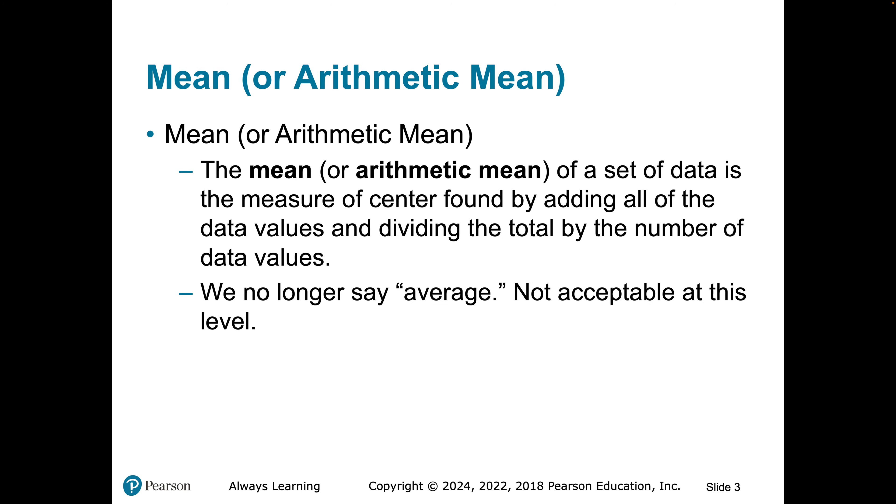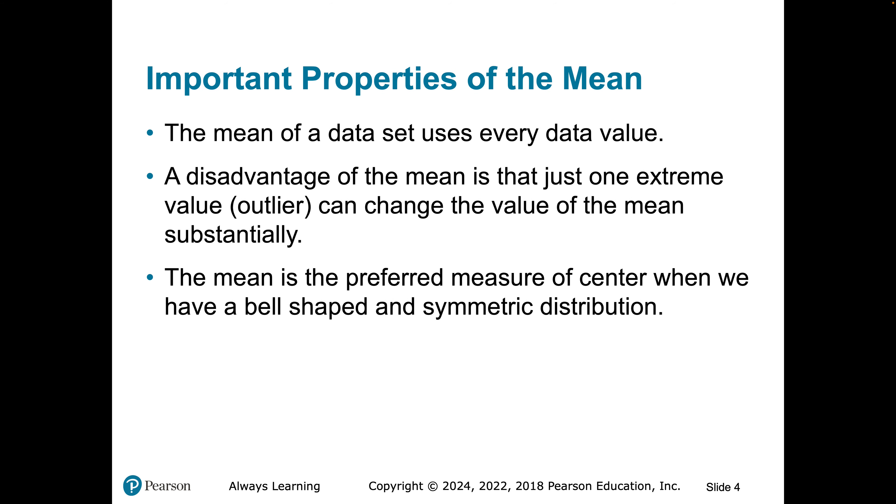So the mean is just the arithmetic mean. A lot of people call it the average. Once we get into advanced statistics, we no longer say average. You're not going to open up any journal article, any publication within your discipline, occupational therapy, nursing, whatever it may be, and see the word average. It's always the mean or the arithmetic mean. The mean is easy to find. You just add up the scores and divide by the total number of, well, your sample size, the total number of numbers that you have.